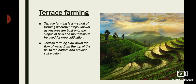Terrace farming slows down the flow of water from the top of the hill to the bottom and prevents soil erosion. This method of farming can be followed to check soil erosion. Terrace farming is commonly used in Asia by rice-growing countries such as Vietnam, the Philippines, and Indonesia. These steps or terraces can hold water for a long time so water cannot flow down from the top to the bottom of the hill.